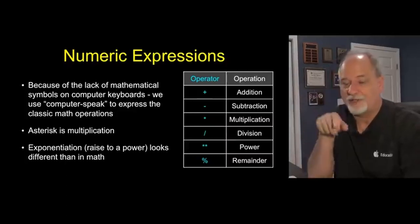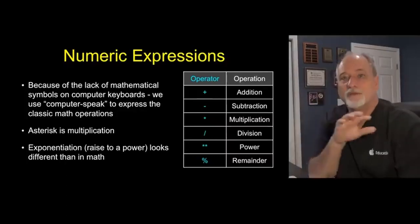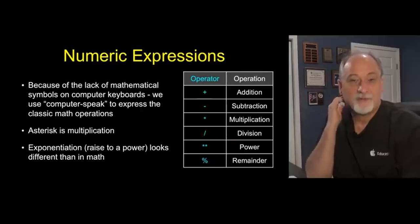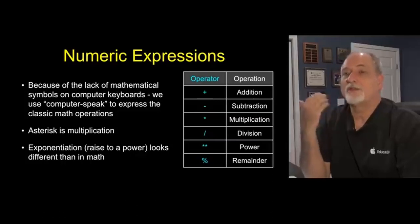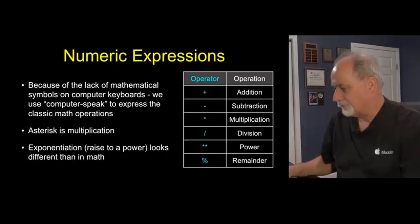Raising to the power, because it didn't have little characters back then, is star star, which is raising to the power. And then remainder. Remainder is when you do integer division, it's also called the modulo operator, it's the remainder, not the quotient.